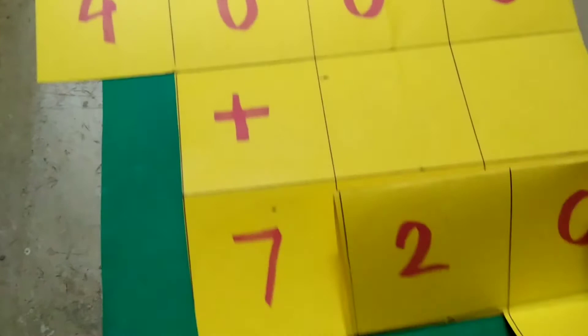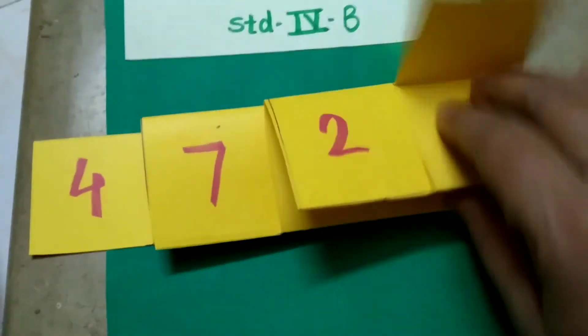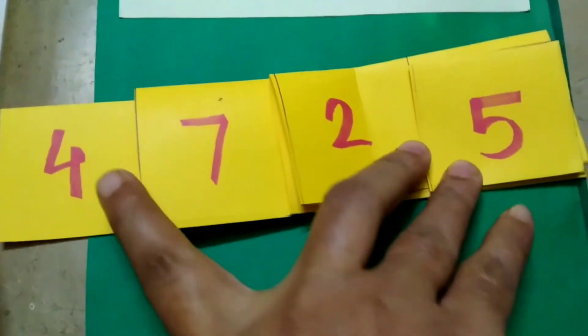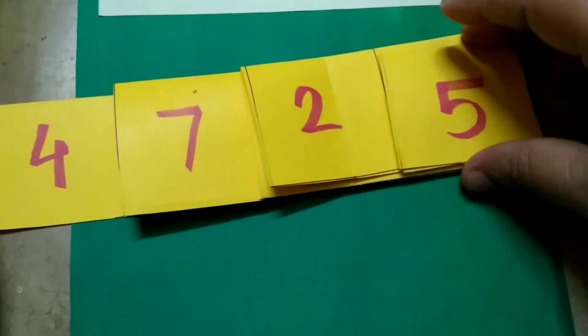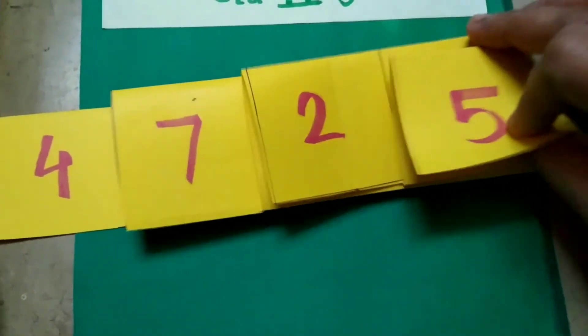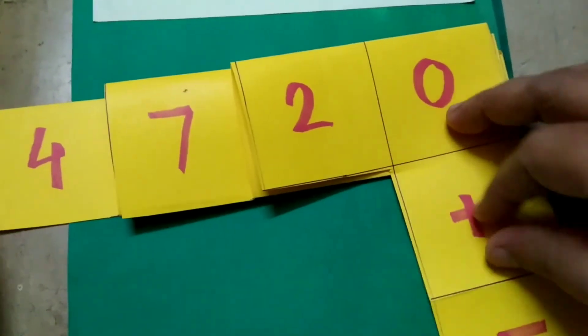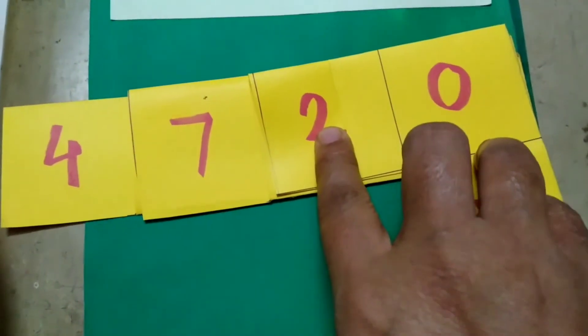Now let's see here. See the number first. 4725. 5 is at unit place. So 5 is at unit place.